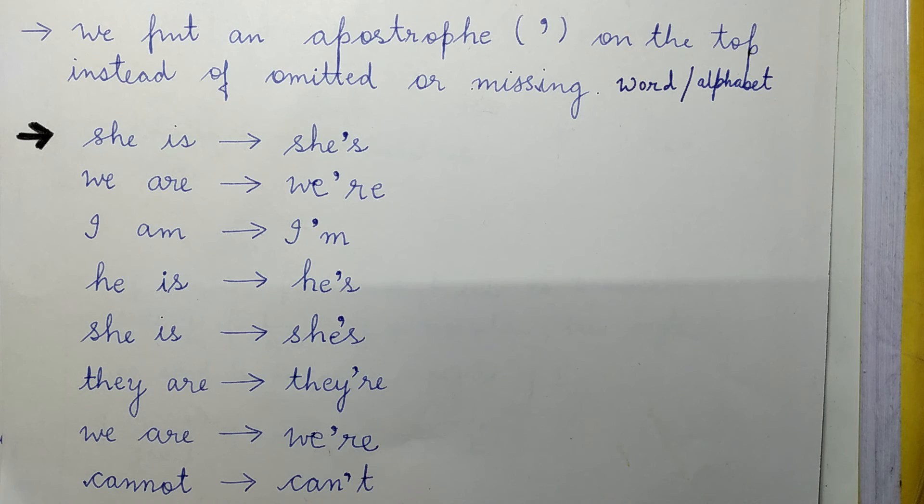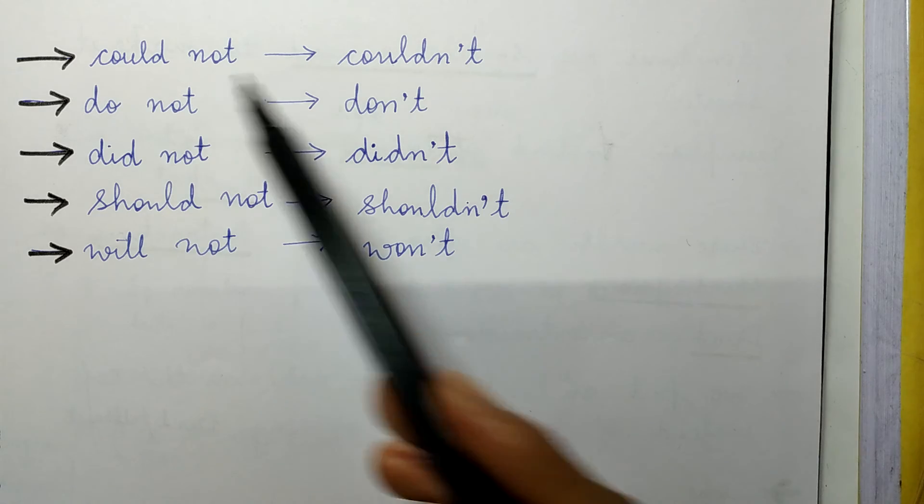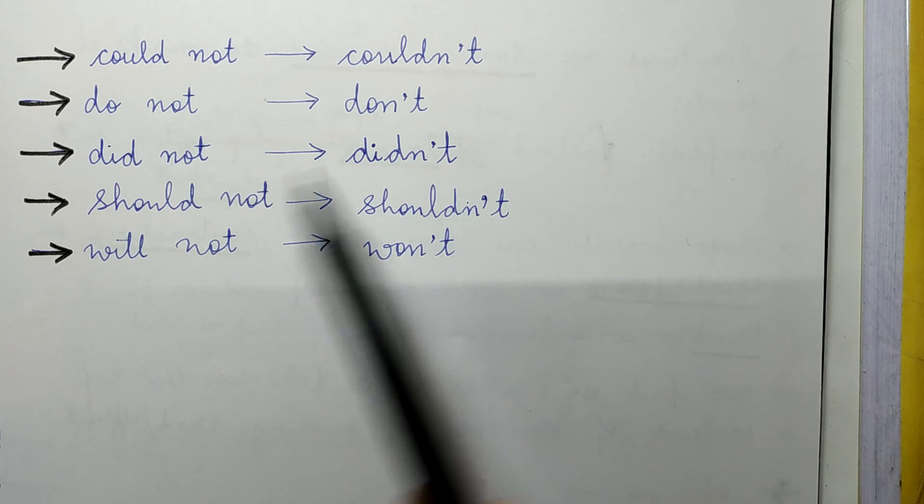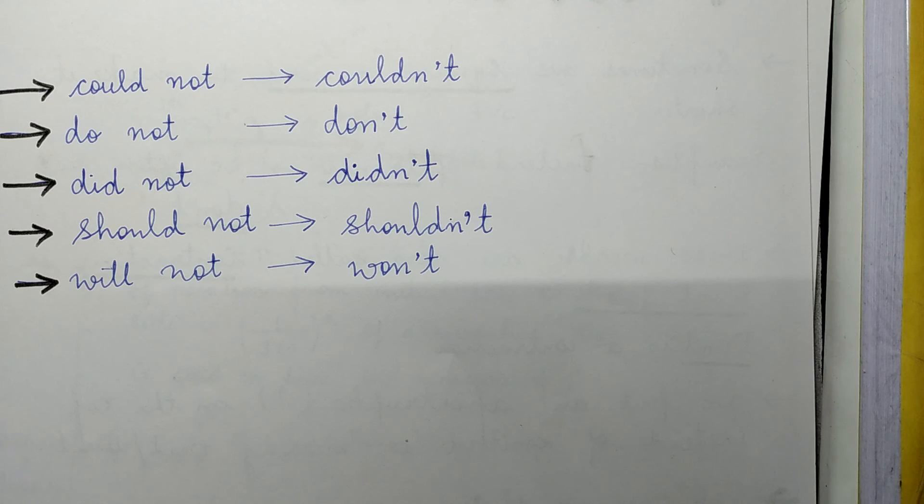There are some other examples like could not becomes couldn't, do not becomes don't, did not becomes didn't, should not becomes shouldn't, will not becomes won't. This is all about short forms. Thank you for watching and have a nice day.